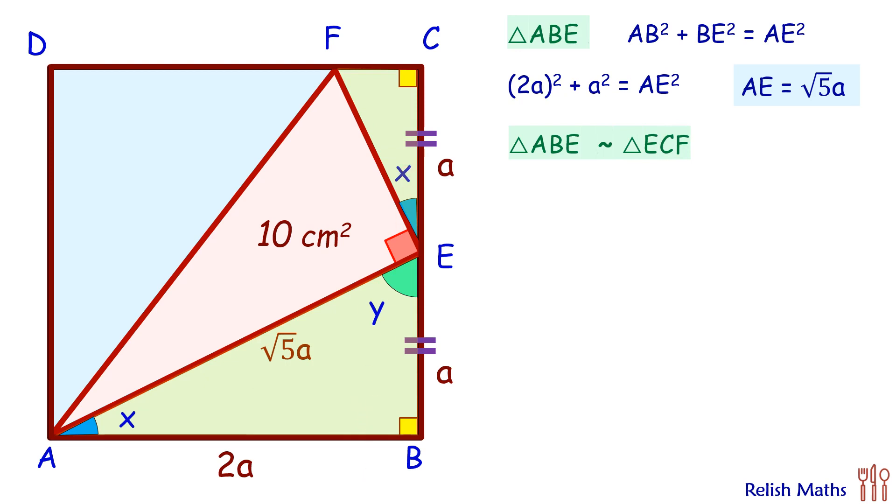As the triangles are similar, the ratio of sides will be equal. So we are comparing AB upon AE, that will equal EC upon EF. Now putting the values: AB is 2A and AE is √5A, and on the other side EC is A and EF is what we are interested to find. Solving this, A will get cancelled and we'll get EF equals √5A upon 2.